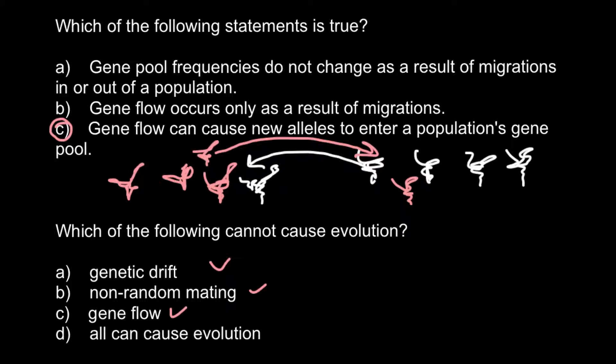That means that answer D, all can cause evolution, would be the correct answer. But you also have to know that along with these three factors, there can be other factors like mutations and environmental pressure. And all these factors usually work together. All these factors cause change in allelic frequency in population and so cause evolution.